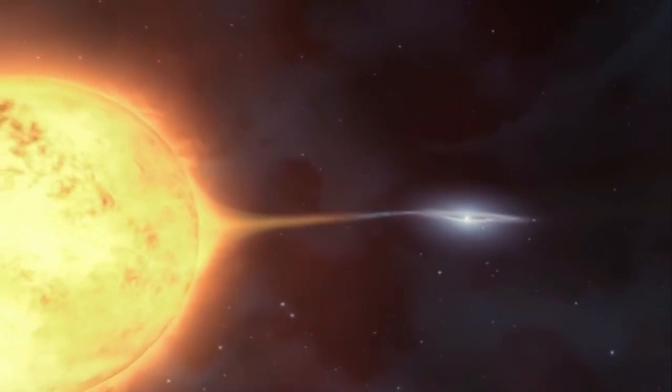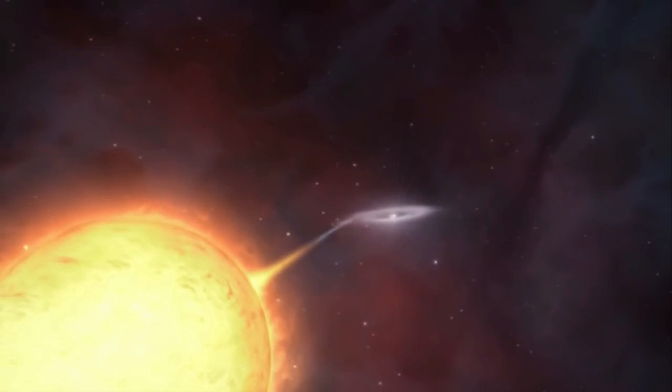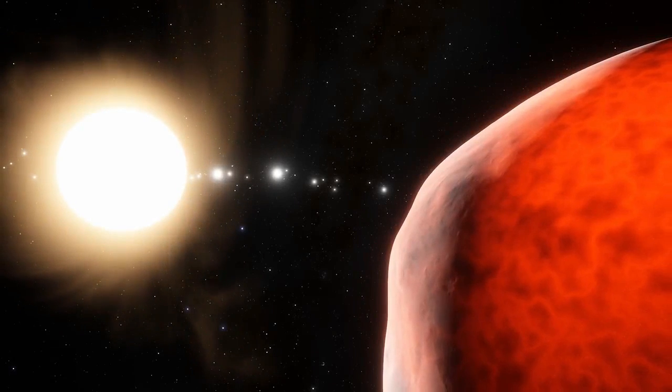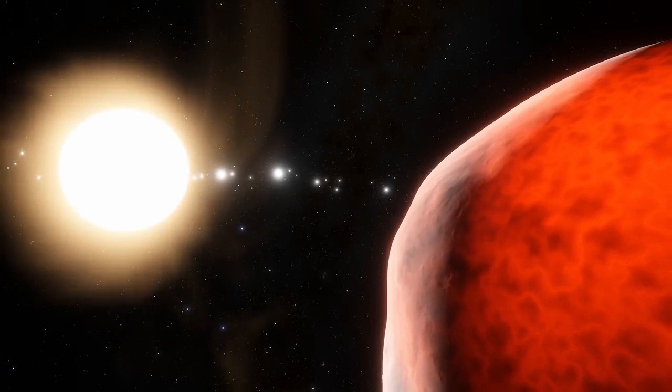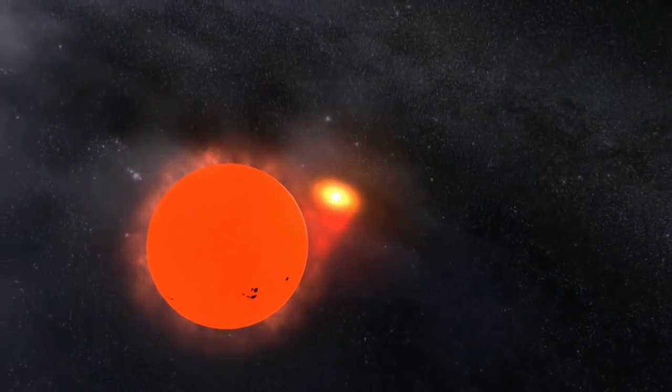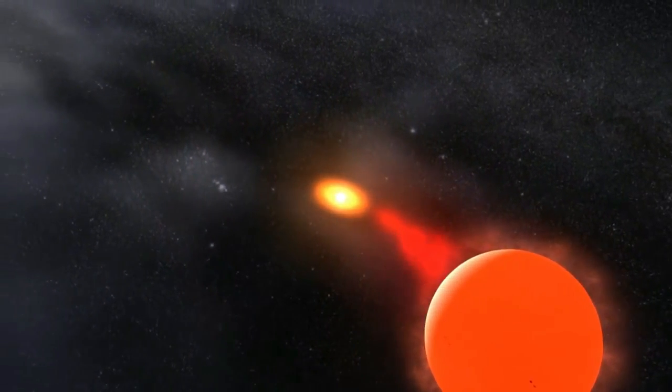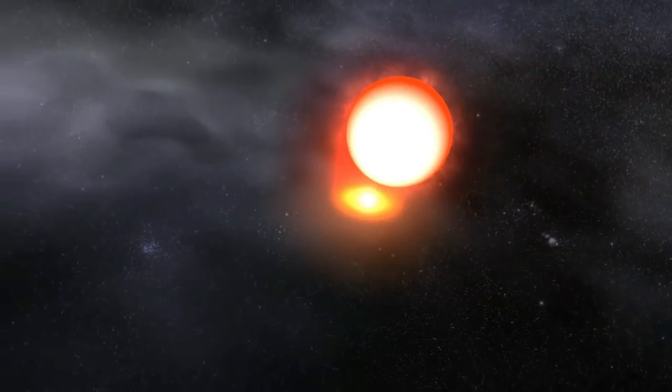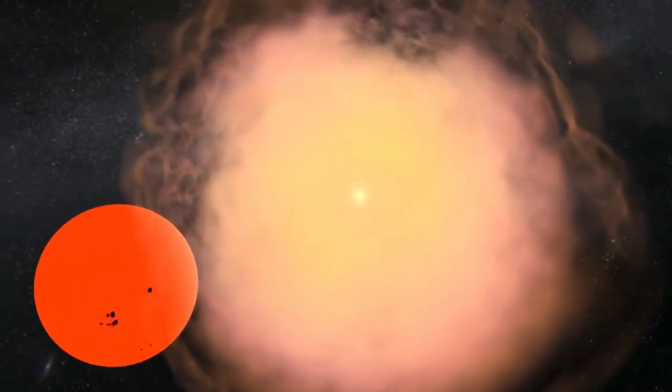A thermonuclear, or type 1A supernova, is the result of the explosion of a white dwarf star in a binary system with a mass of at least eight times the mass of the Sun, when that star becomes so massive that it can no longer support itself after sucking in material from a nearby companion. The matter accumulates on the surface of the white dwarf and, once it reaches a specific mass threshold, a runaway thermonuclear explosion occurs that destroys the white dwarf.